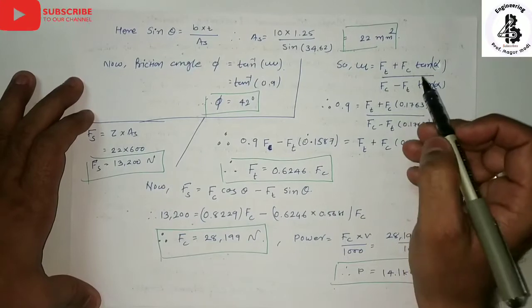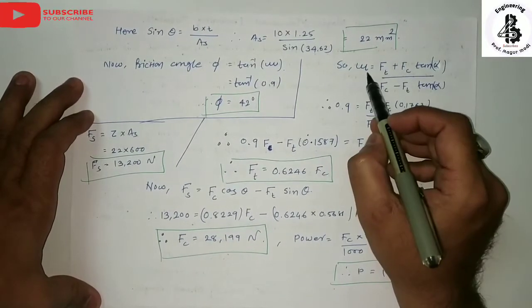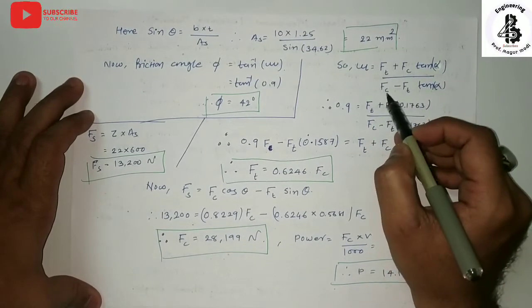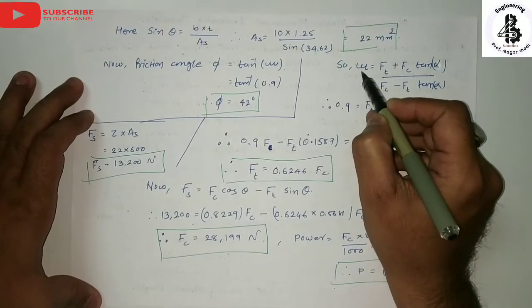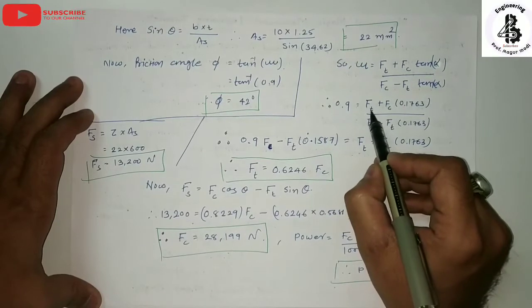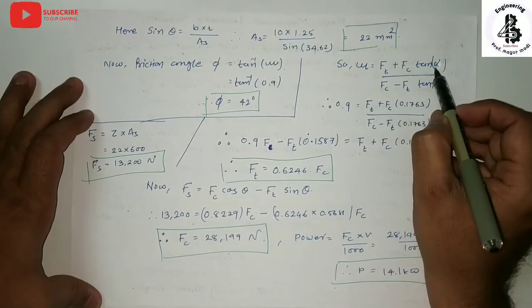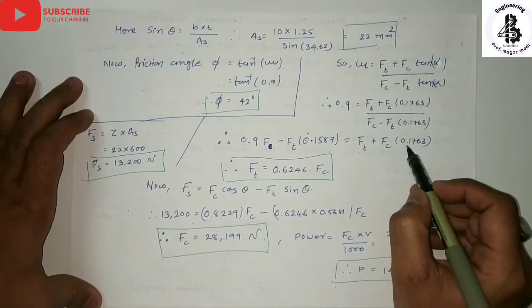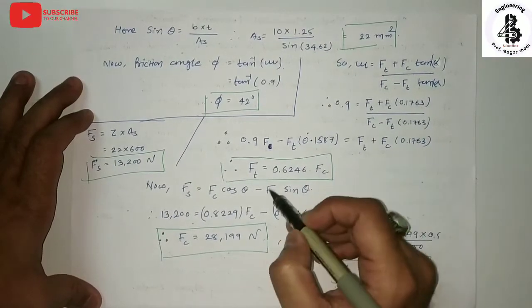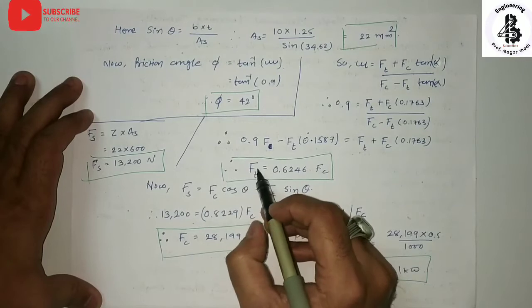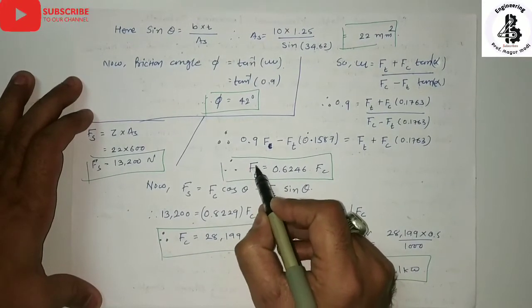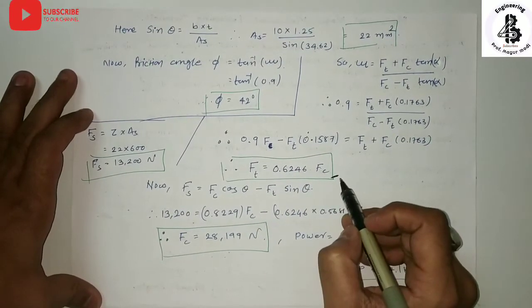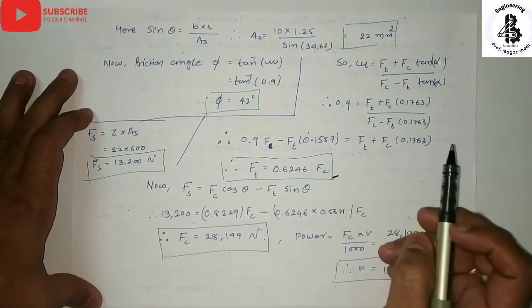Using the friction equation — mu = (Ft + Fc·tan(alpha)) / (Fc − Ft·tan(alpha)) — and substituting the value of mu = 0.9 and alpha = 10 degrees, and simplifying, we get the relationship: Ft = 0.6246 × Fc. This is an important relationship between the thrust force and cutting force.